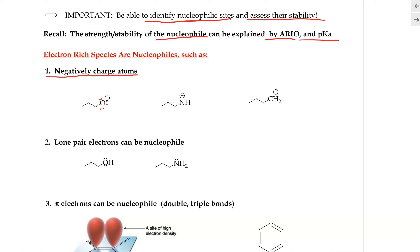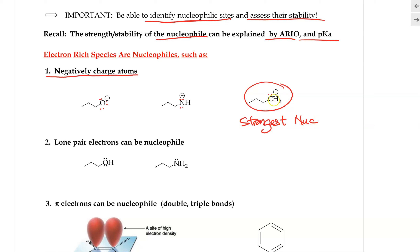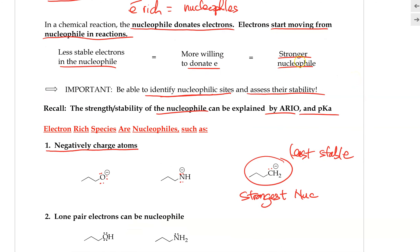Make sure we pay attention to the lone pair of electrons on all of these atoms. We have three different species that all carry a negative charge, making them great nucleophiles. Between the three, carbon with a negative charge would be the strongest nucleophile compared to negatively charged oxygen and nitrogen, because when carbon is negative it is least stable, and being least stable makes it more willing to donate electrons and therefore more reactive.